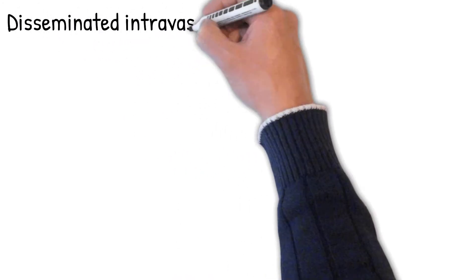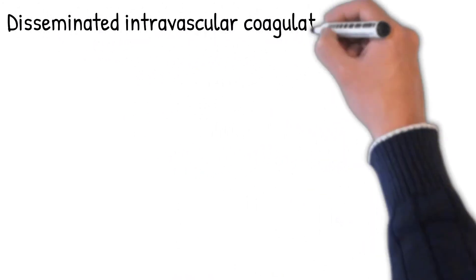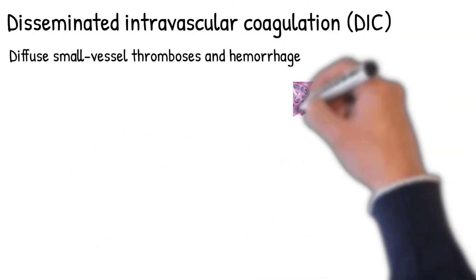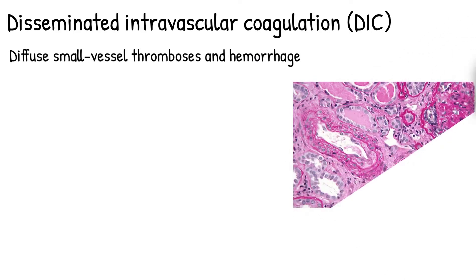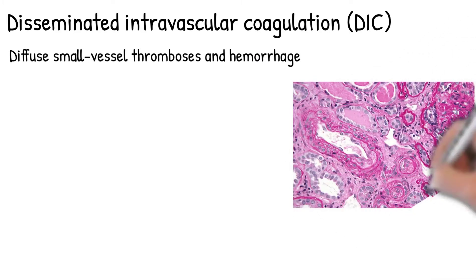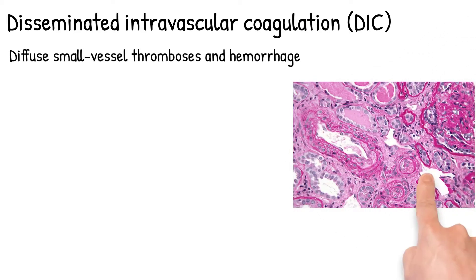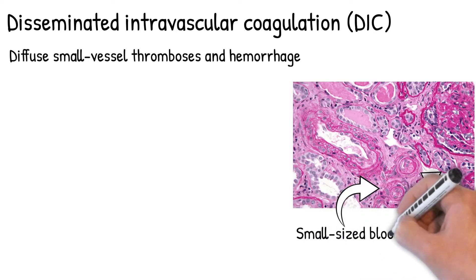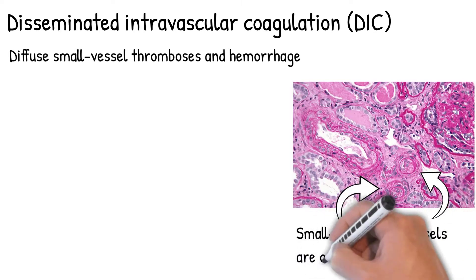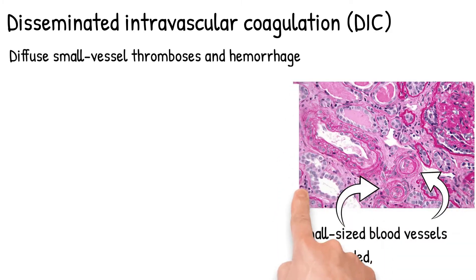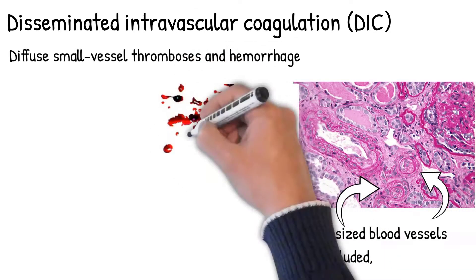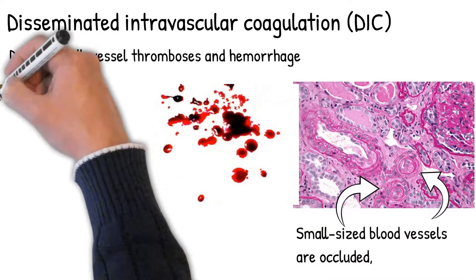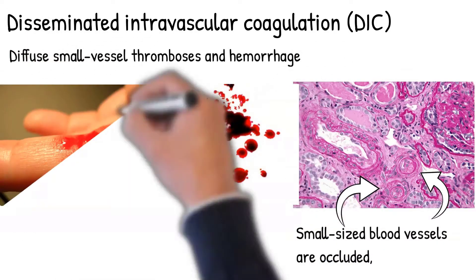Disseminated intravascular coagulation, DIC, is a disorder characterized by diffuse small vessel thromboses and hemorrhage. It means small-sized blood vessels are occluded throughout the body, producing widespread ischemic damage. At the same time, it causes deficiency of platelets and clotting factors, and the result is bleeding inside or outside the body.